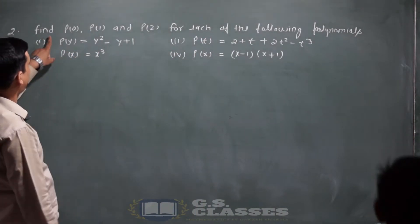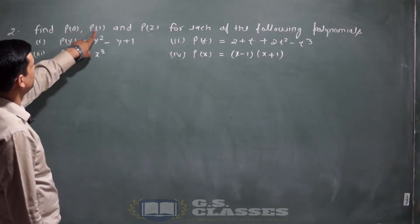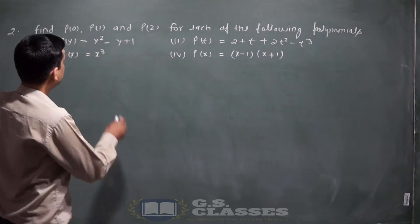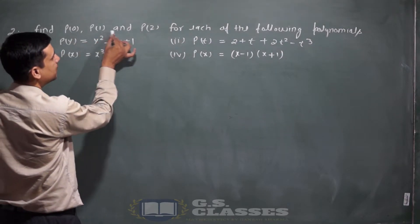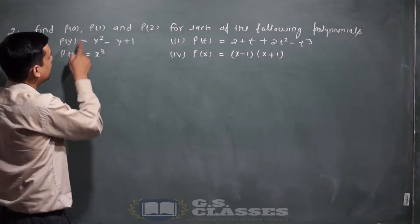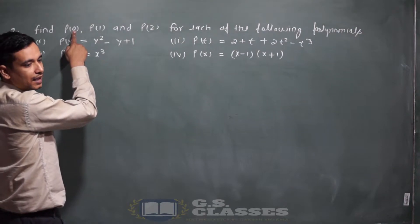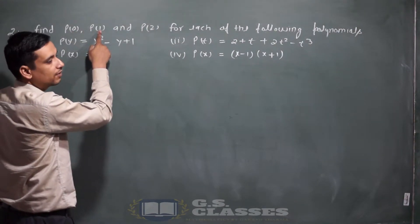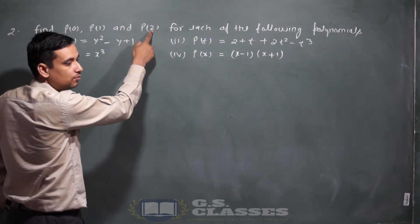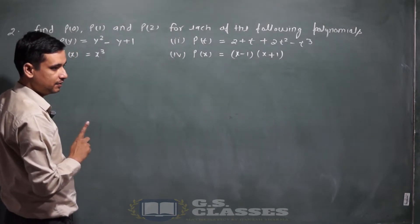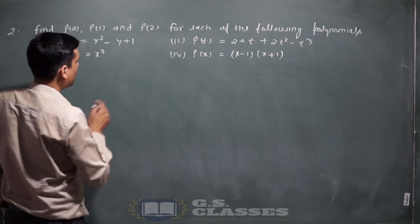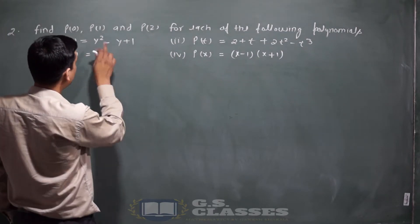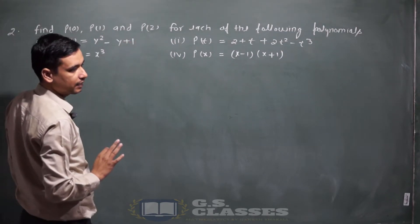Second question है: find p(0), p(1), p(2)। इन quantities को देखकर समझ में आना चाहिए — p(0) मतलब x की value 0 रखनी है, p(1) मतलब 1 रखनी है, p(2) मतलब 2 रखनी है। इस बार polynomial change कर दिए हैं, और each polynomial के लिए तीनों values निकालनी हैं।